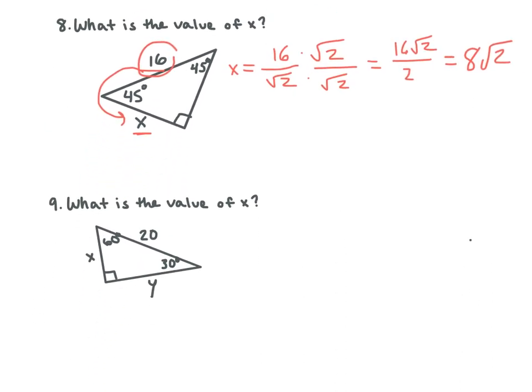Let's look at number 9. What is the value of x? We're looking for the one across from 30. What do we need to do? Divide by 2. So x equals 10. What if it asks for y also? It would be 10 square root 3 — we take our x and multiply it by square root 3. That would be our answer.